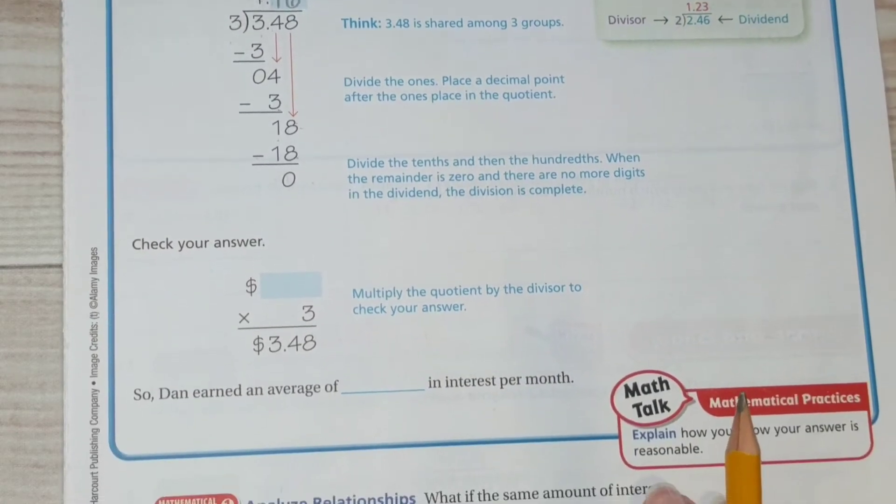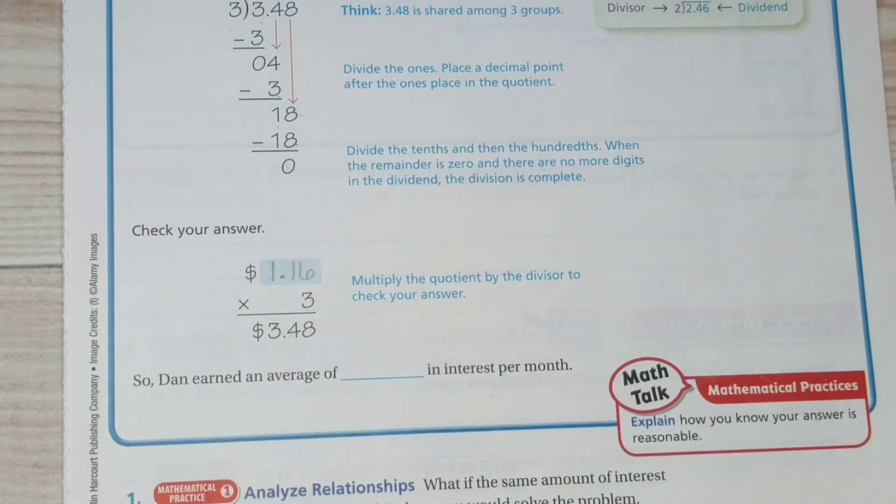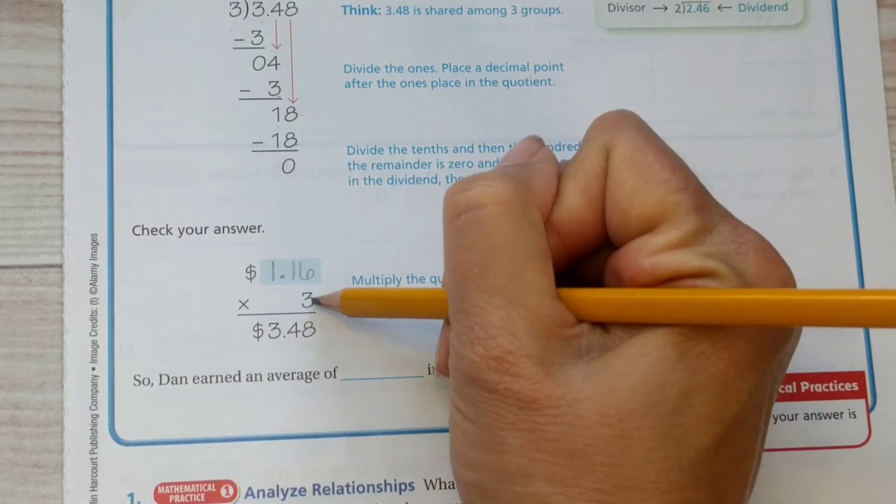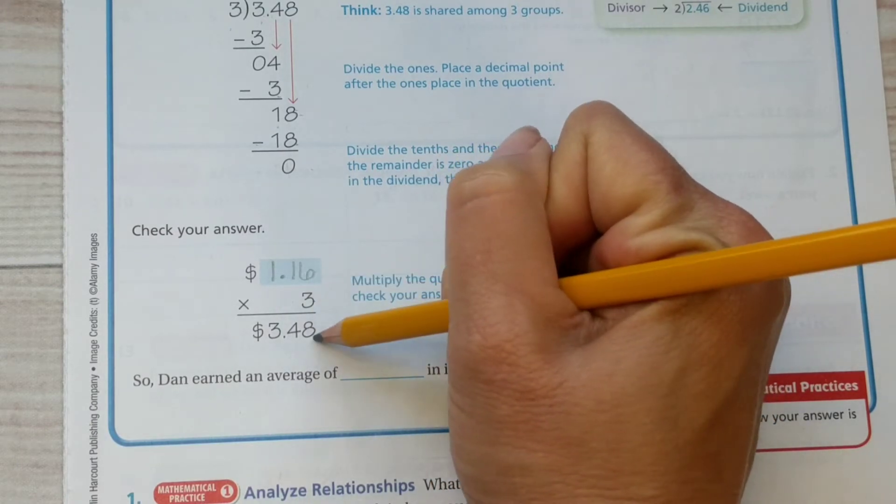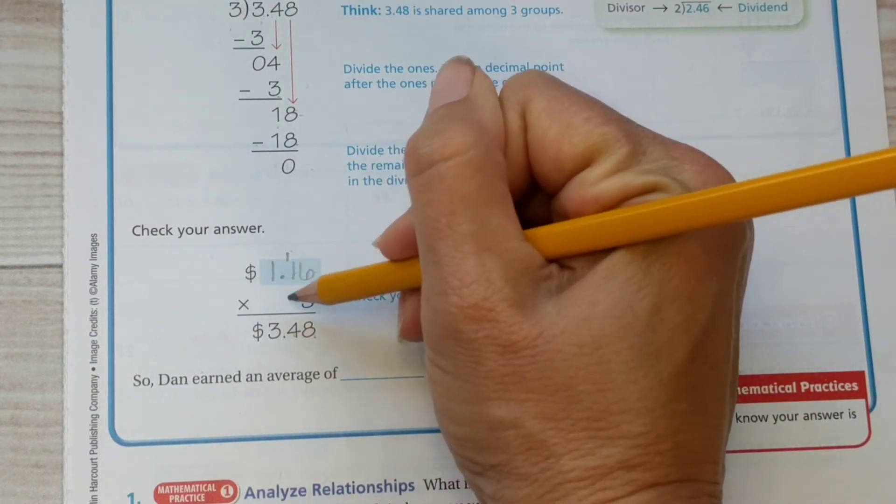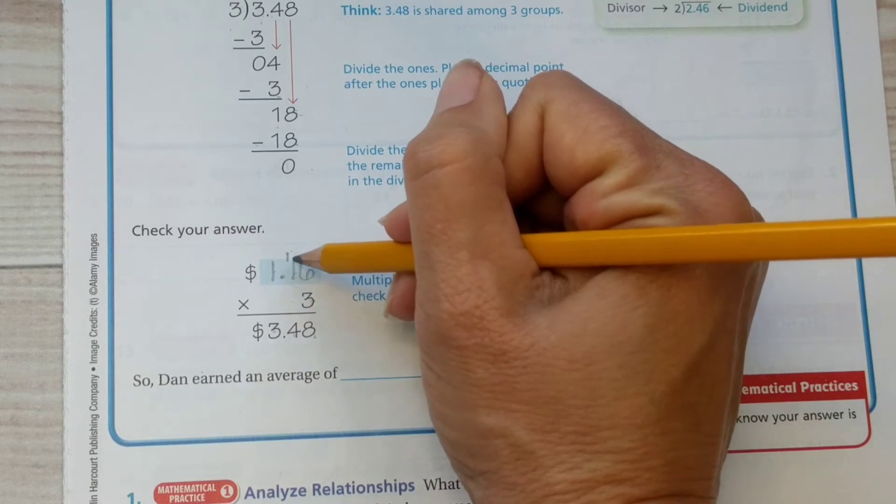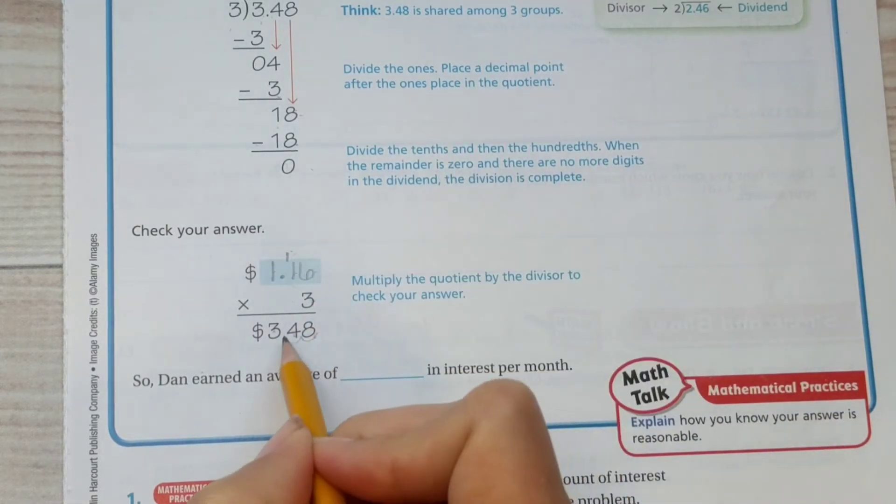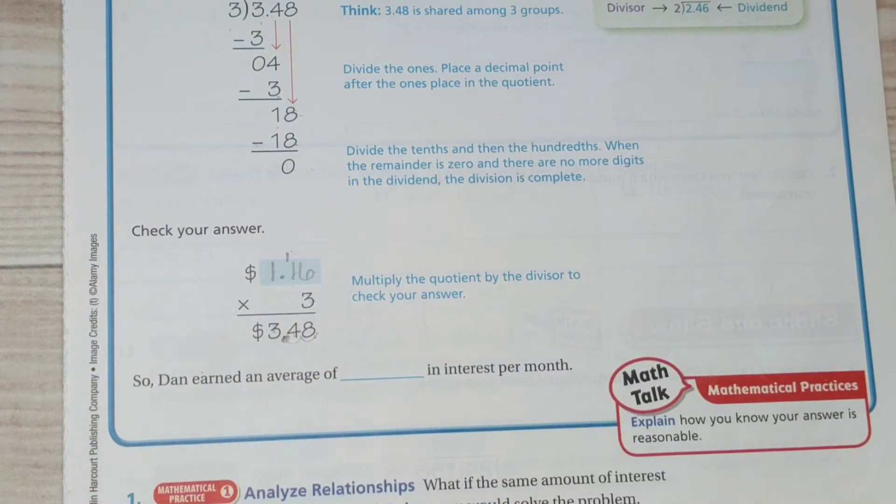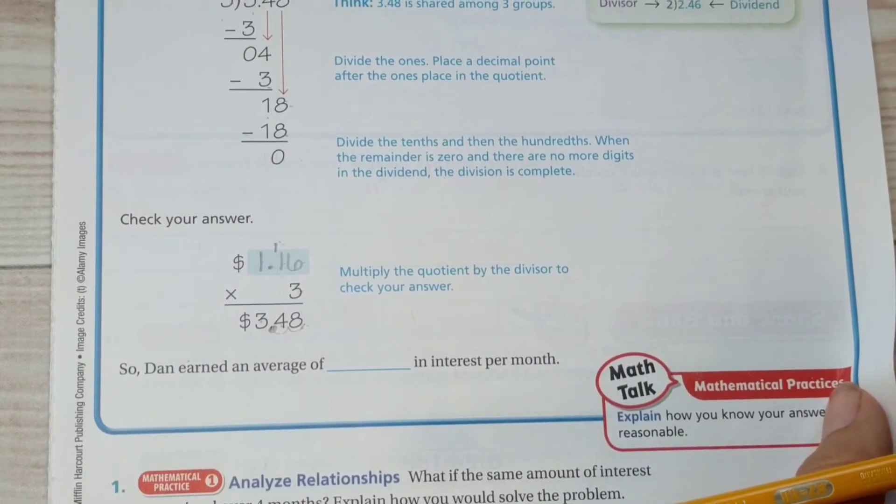So now let's check our answer. Our final answer was one and sixteen hundredths or one dollar and 16 cents is how much he earned each month. We're going to make sure that our division was correct. Three times six is 18. Regroup the one. Three times one is three plus one more is four. Three times one is three. There are two digits behind the decimal. Therefore, we scoop over two times, put the decimal there. We end up with three dollars and 48 cents, which is the same as the original problem. Therefore, we did our division problem correctly.